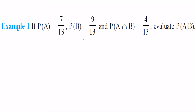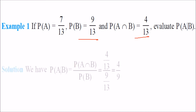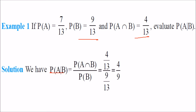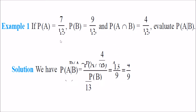Given P(A), P(B), and P(A∩B), find P(A|B). P(A|B) is P(A∩B) divided by P(B). Substituting the values: P(A∩B) over P(B) equals the given value over 9/13, which gives 4/9.